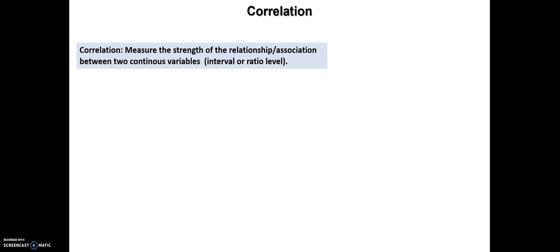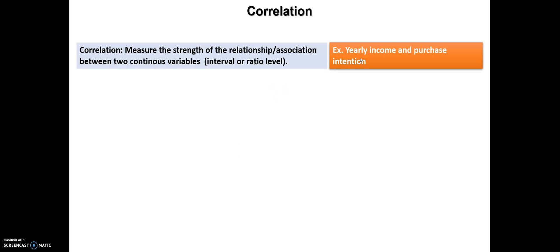Correlation measures the strength of the relationship between two continuous variables. They can be interval or ratio level. Consider that we have two variables like yearly income and purchase intention. Both of them are a kind of continuous variable, so I can use correlation analysis in order to calculate the relationship between these two variables.